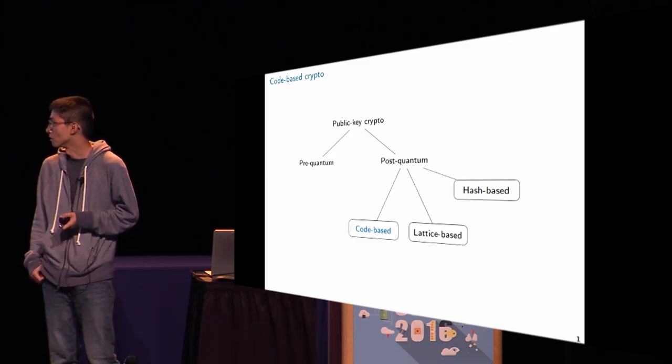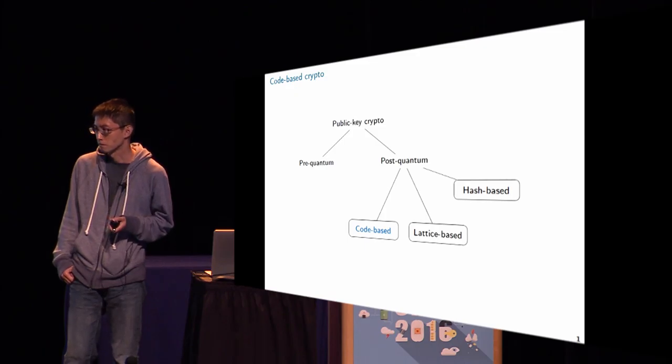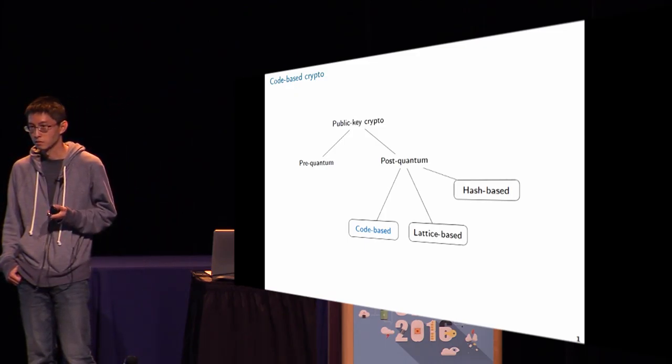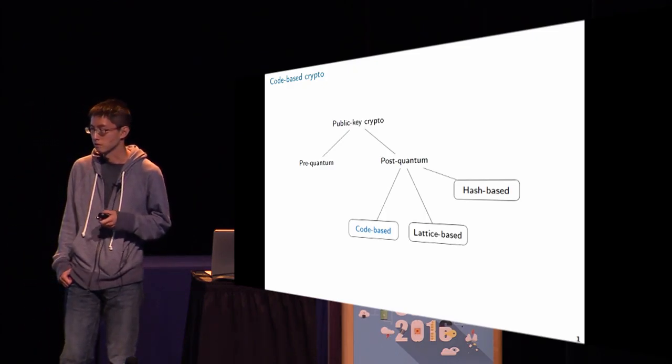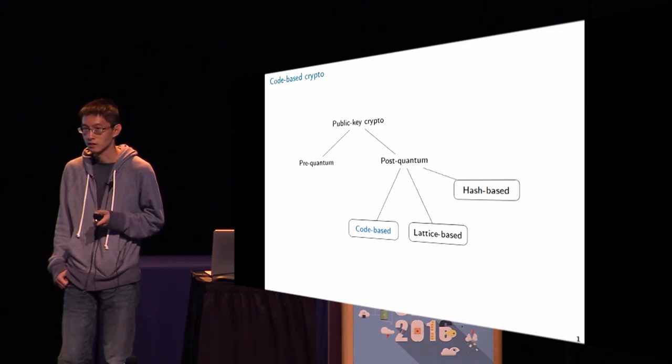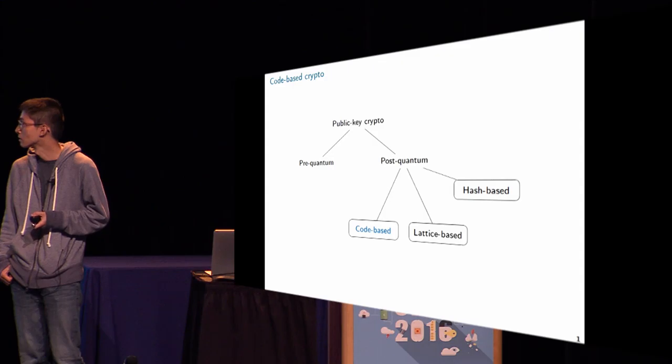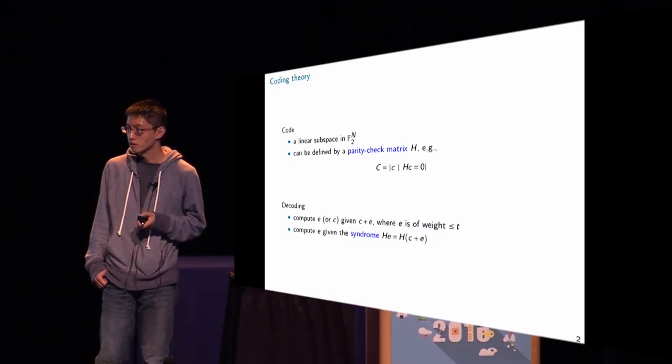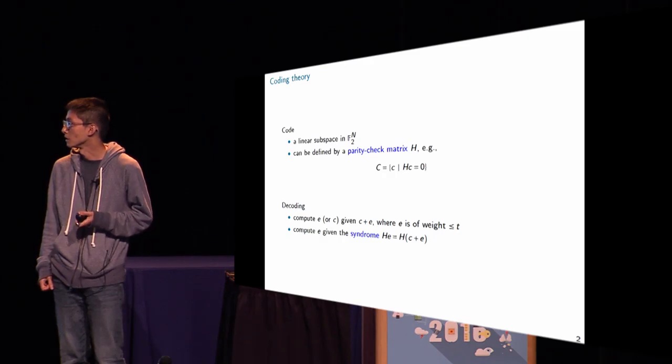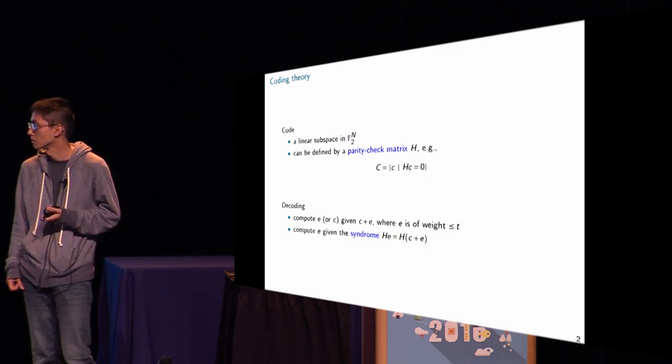So code-based crypto is a branch of post-quantum crypto, and right now I think the situation is we have very confidence-inspiring post-quantum signatures by using hash-based signatures. For encryption schemes, it seems that either code-based or lattice seems to be promising. That's why we care about code-based crypto in the first place. As the name implies, code-based crypto is based on coding theory. So let me give a small background about coding theory. In this talk, whenever I'm talking about code, I mean a linear subspace of F2 to the N.